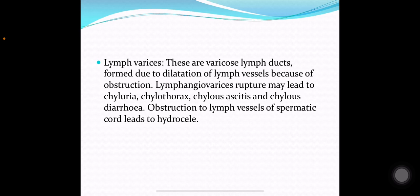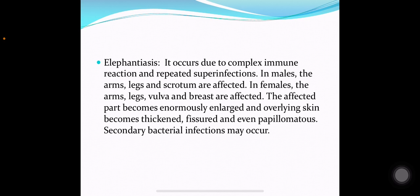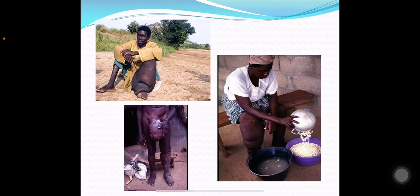Lymph varices are varicose lymph ducts formed due to dilatation of lymph vessels because of obstruction. Lymph angiovarices rupture may lead to chyluria, chylothorax, chylous ascites and chylous diarrhea. Obstruction to lymph vessels of the spermatic cord leads to hydrocele. Elephantiasis occurs due to complex immune reactions and repeated superinfection. In males, the arms, legs and scrotum are affected; in females, the arms, legs, vulva and breast are affected. The affected part becomes enormously enlarged and the overlying skin becomes thickened, fissured and even papillomatous. Secondary infection may also occur.